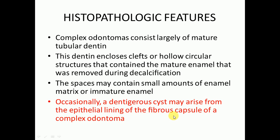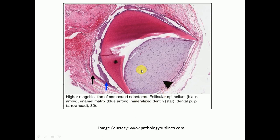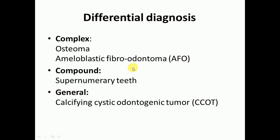Occasionally a dentigerous cyst may arise from the epithelial lining of the fibrous capsule of a complex odontoma — this is an important point. The histological structures include enamel matrix, dentine, enameloid matrix, pulp, and epithelial covering. Regarding differential diagnosis: complex odontoma can be confused with osteoma or ameloblastic fibroodontoma, while compound odontoma resembles supernumerary teeth and calcifying cystic odontogenic tumors.